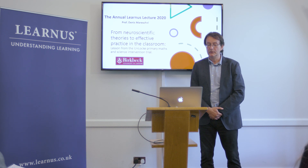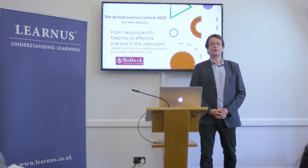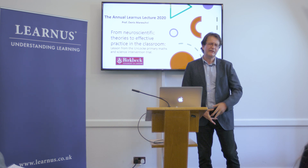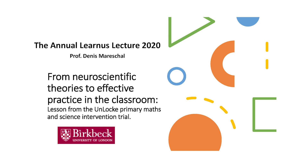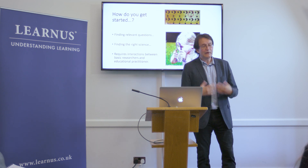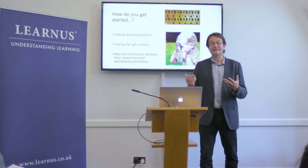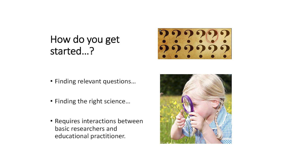When Caroline invited me some time ago to give this talk, I was pressed for a title. And because it was far off, I thought, here's a grandiose title: 'From neuroscientific theories to effective practice in the classroom.' It'll bring in the crowds. It's tantalizing. But of course it raises the problem of, well, how do you do this? How do we get started with trying to go from basic scientific theory to practice in the classroom?